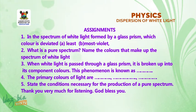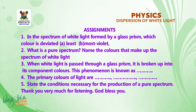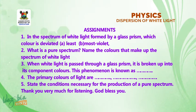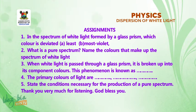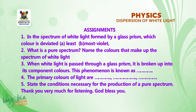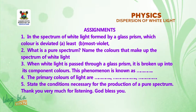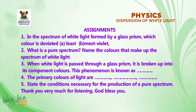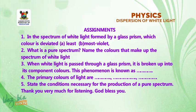Now let's take the following as a practice exercise. One, in the spectrum of white light formed by a glass prism, which color is deviated most? Two, what is a pure spectrum? Name the colors that make up the pure spectrum of white light. Three, when white light is passed through a glass prism, it is broken up into its component colors — this phenomenon is known as what? Four, primary colors of light are? Five, state the conditions necessary for the production of a pure spectrum. Thank you very much for listening. God bless you.